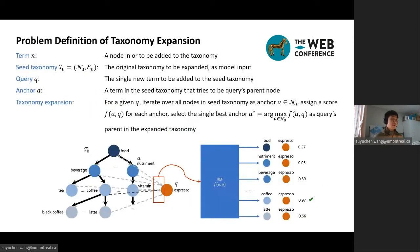Now, let's define the task of taxonomy expansion. First, a term N is a node in, or to be added to the taxonomy. The seed taxonomy T0 is the original taxonomy to be expanded. The query Q is a single new term to be added to the seed taxonomy. An anchor A is a term in the seed taxonomy that tries to be query's parent node in the current trial. The task is for a given Q, iterate over all nodes in the seed taxonomy as anchor A, assign a score FAQ for each anchor, and select the single best anchor A star equals argmax FAQ as query's parent in the expanded taxonomy.